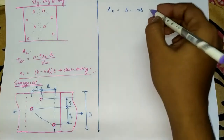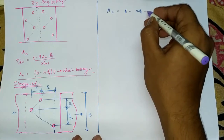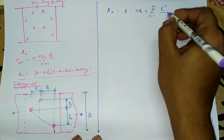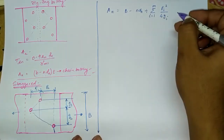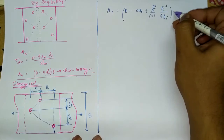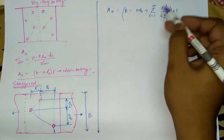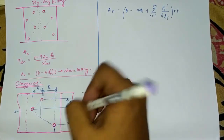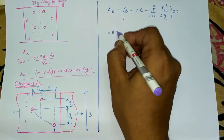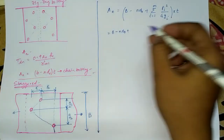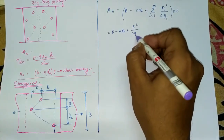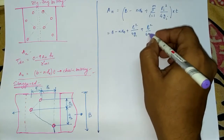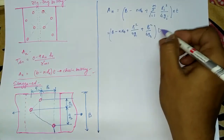To account for this additional inclined length, we add a component: Σ(pi² / 4gi). This is multiplied by the thickness of the plate. Since we have different pitches and gauges — p1, p2, g1, g2 — we take them one by one: (b − n×d0 + p1²/4g1 + p2²/4g2) × t. This gives the net effective area for the staggered connection.